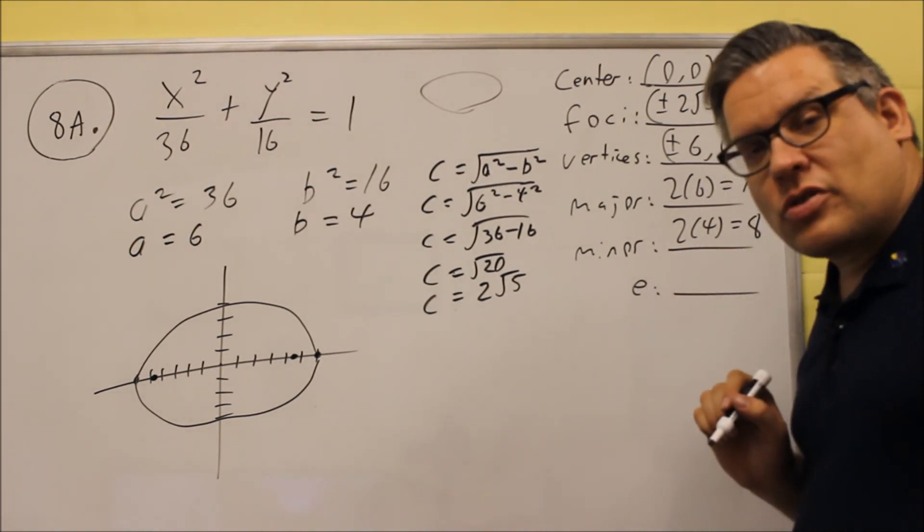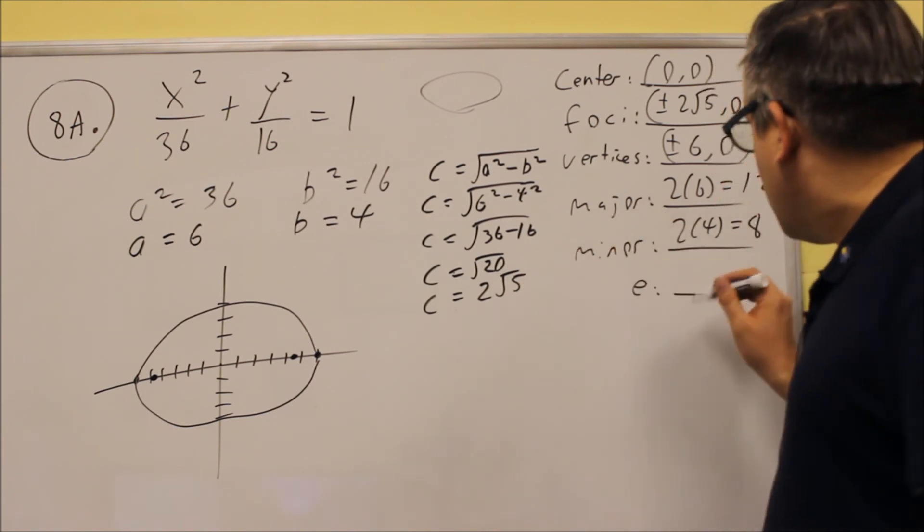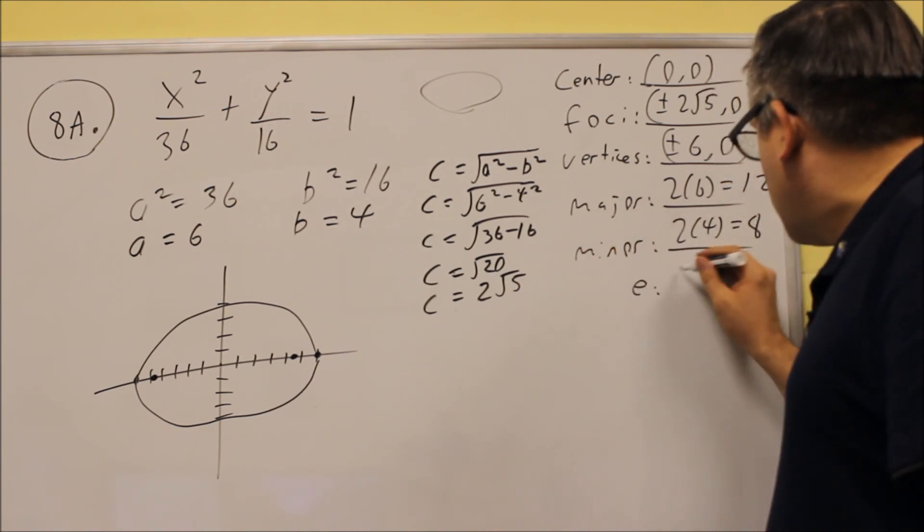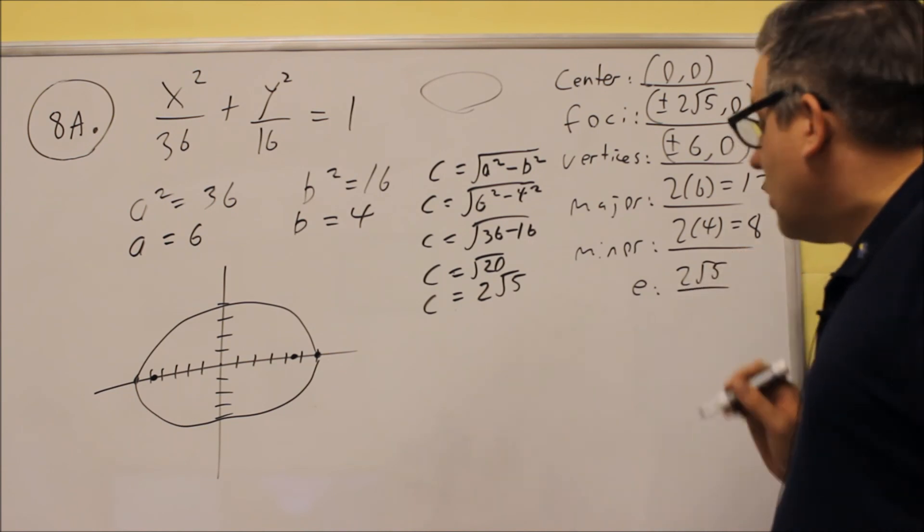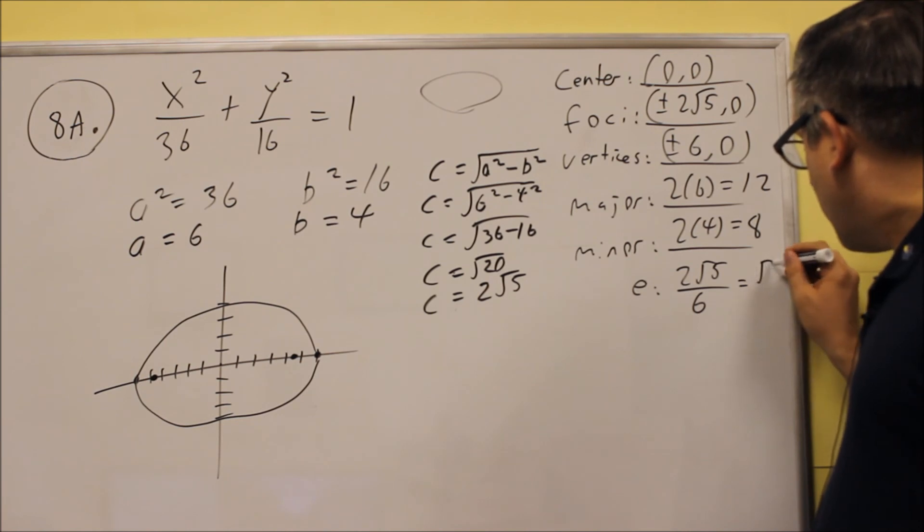Eccentricity, the formula for eccentricity is always C over A. So we're going to do 2 square root of 5 over A, which is 6. And this can be reduced to square root of 5 over 3.